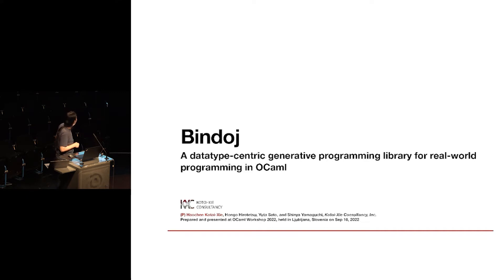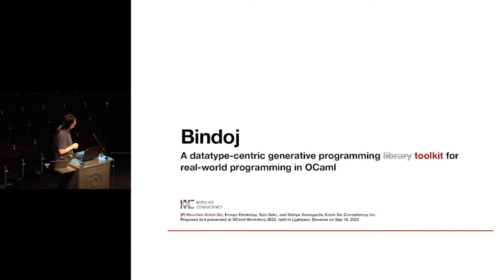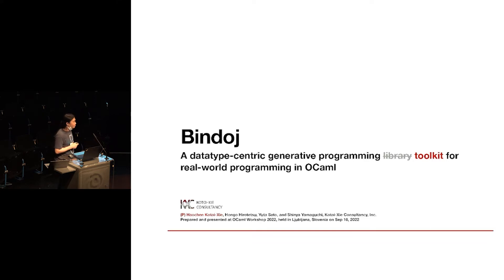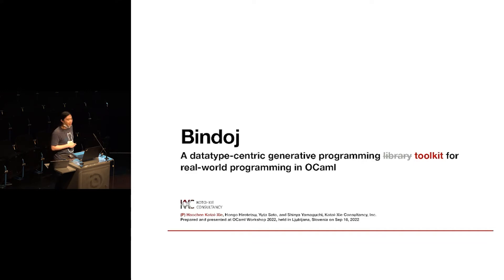It's a very long subtitle. Reading it again, I figured out that probably we shouldn't use the word library, but it is a library. It's easier to understand. On the highest level, it is a data-type-centric generative programming toolkit for real-world programming in OCaml. What does that mean? I'm going to unpack it in a few seconds.